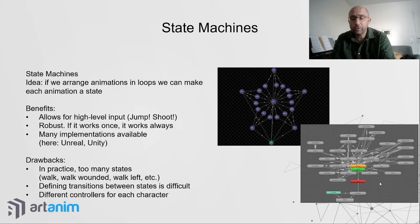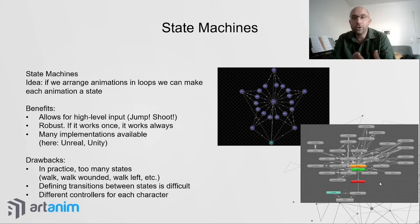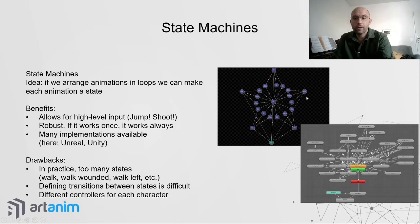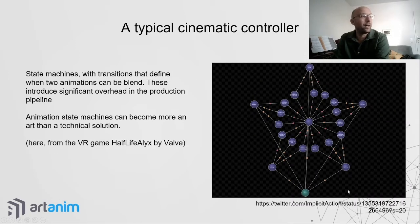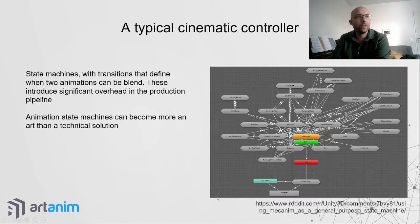State machines are widely used in video games today. Advantages include high-level input, robustness, and availability in Unreal and Unity. However, once you have many animations, you can end up with too many transitions — an animation graph that starts clean can quickly become a mess, and debugging it becomes harder and harder.